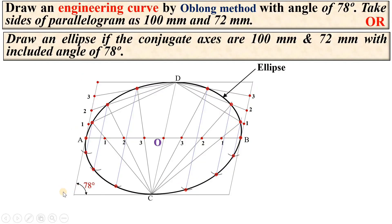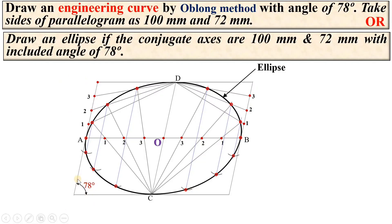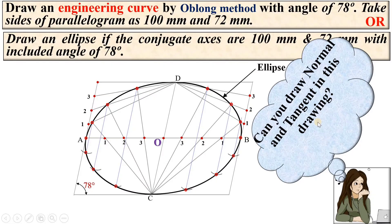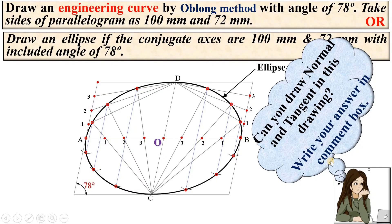The only difference is that in the rectangle method, the angle is 90 degrees between the two conjugate axes, whereas in the parallelogram method, the angle is less than 90 degrees. At last, a very simple question: can you draw the normal and tangent in this drawing? Write your answer in the comment box. Thanks, my dear friends, for watching this video — please click the like button to appreciate it.